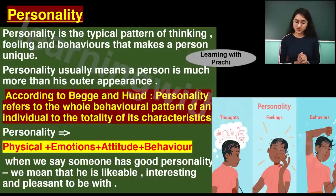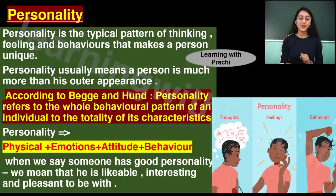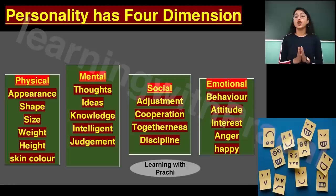According to Beg and Hund, personality refers to the whole behavioral pattern of an individual — the totality of its characteristics. As you can see in the photo, personality includes physical appearance along with thoughts, feelings, and behaviors. When we say someone has a good personality, we mean that he is likable, interesting, and pleasant to be with.